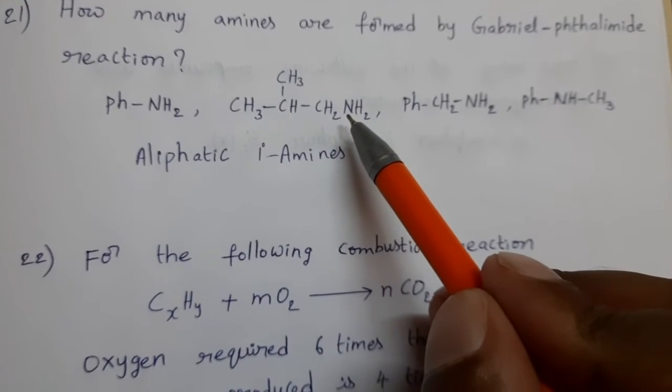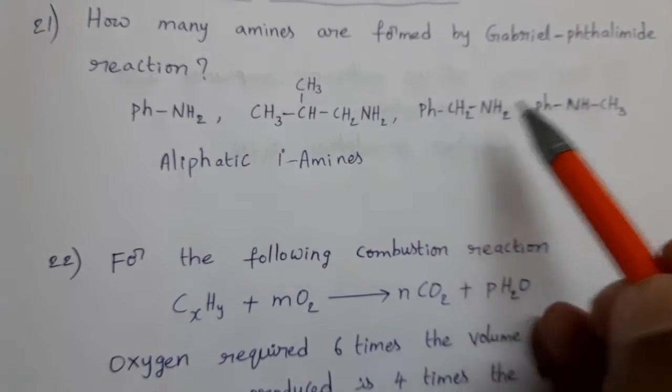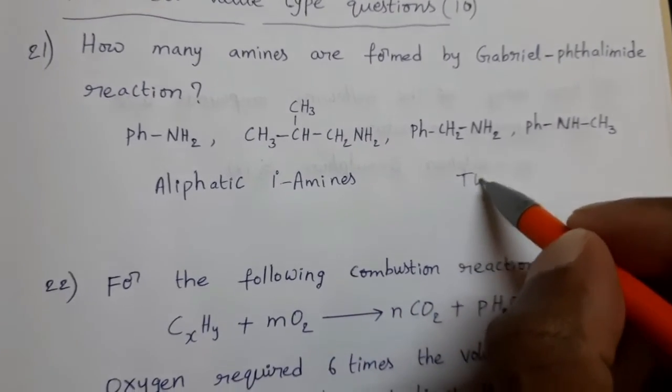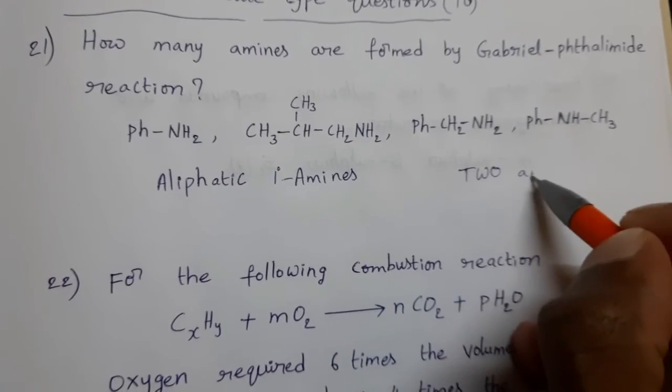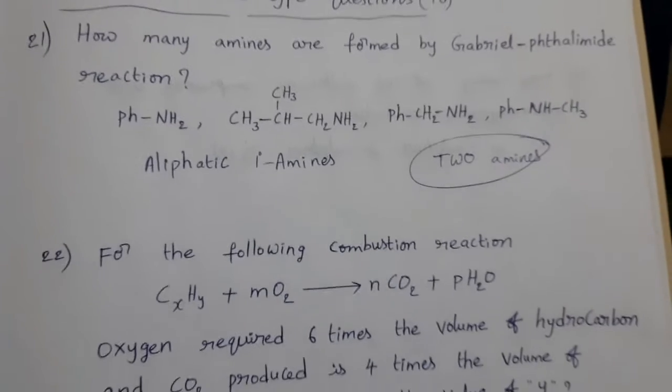We can prepare this compound and this compound by using Gabriel phthalimide reaction. How many amines we can prepare means, answer 2 amines. 2 amines we can prepare.